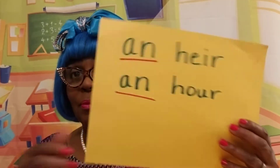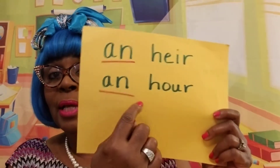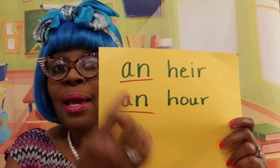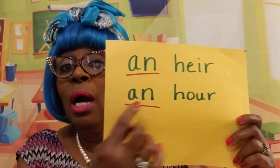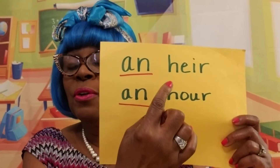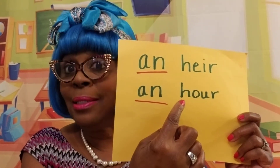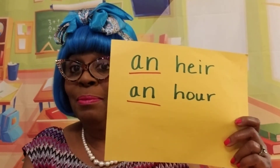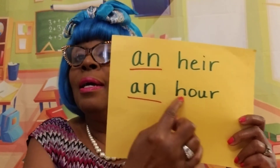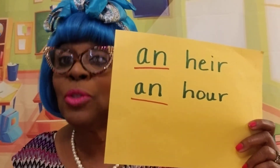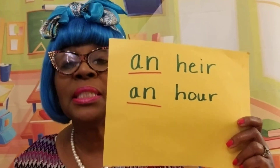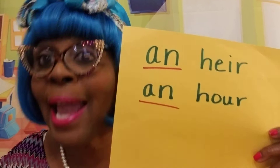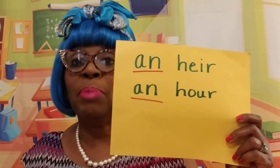What about air and hour? These both begin with H, which is a consonant. But you don't say a-air or a-hour. Because the H in air is silent — the sound is a vowel sound. An air, right? An hour. You hear the vowel sound. So if you hear the vowel sound, you must apply an. If you hear the consonant sound, you must apply a.